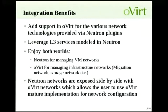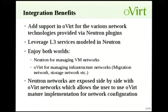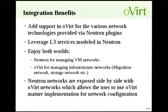We want to enjoy both worlds. oVirt is really powerful at managing infrastructure networks like storage and migration networks — networks that VMs don't necessarily use directly but are used for migration traffic and throttling. For VMs, Neutron is way more powerful and has more capabilities. We'd like to use Neutron for managing the VM networking aspect, while VM networks will still have permission capabilities and all VM-level capabilities that exist in oVirt — the best of both worlds.